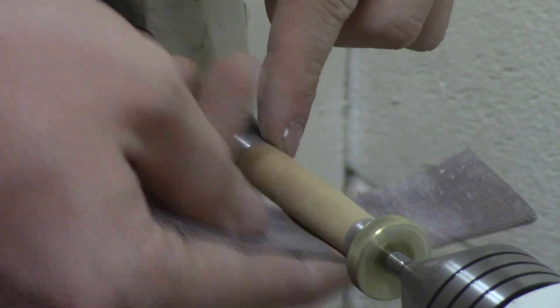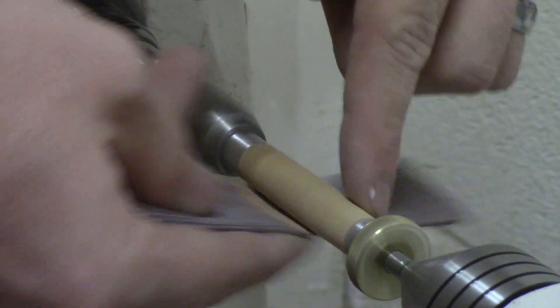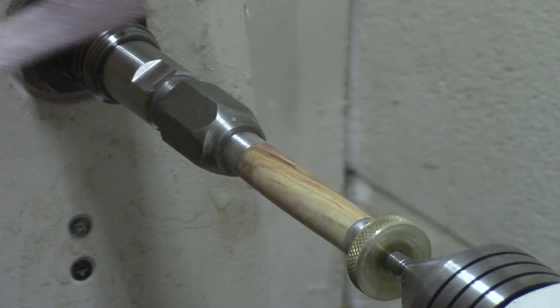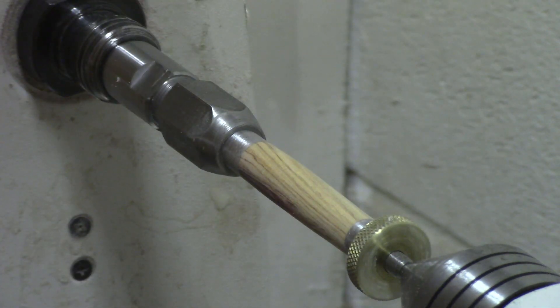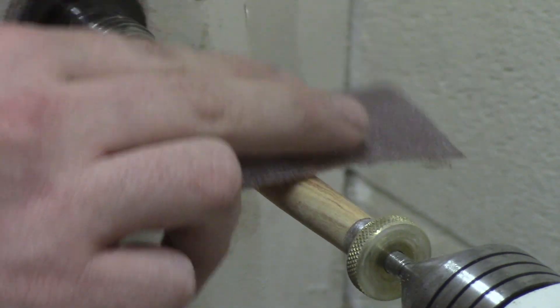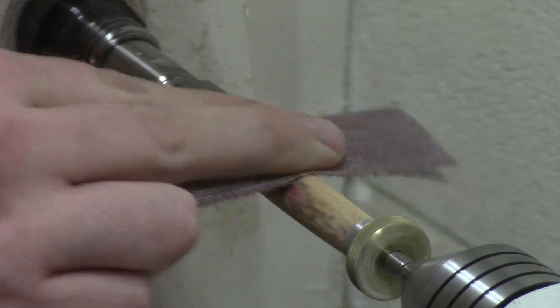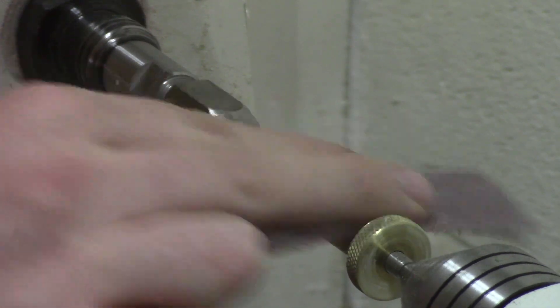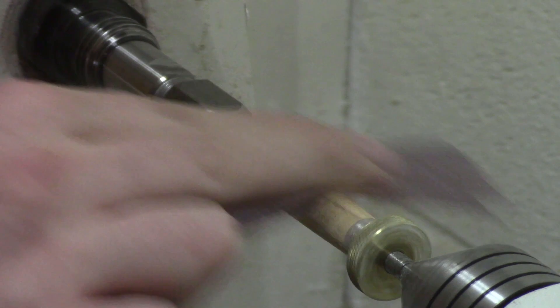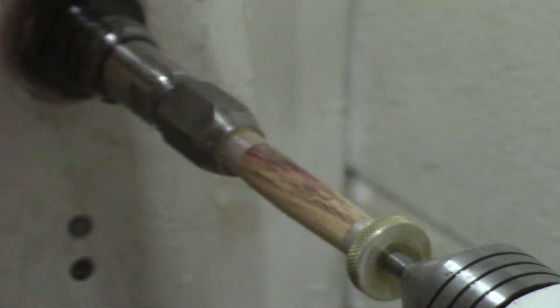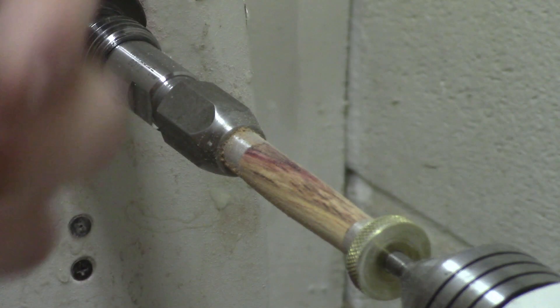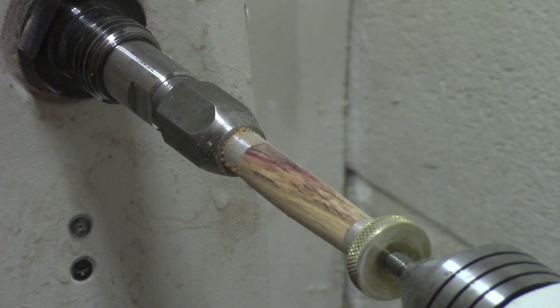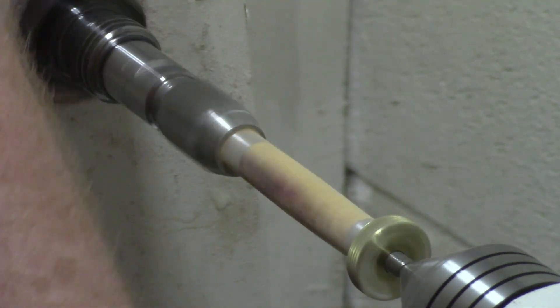I sand until I think I have a decent finish on the surface, and I'll check it. Once I'm pretty good, I'll stop the lathe and then manually turn this with my own hand and sand in the direction of the grain to eliminate any of the finer scratches. I'll do this with all of the grits of Abernet.